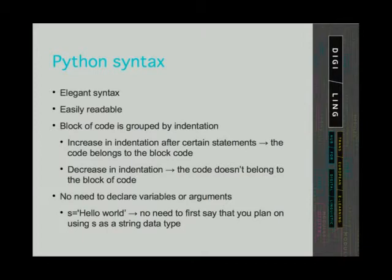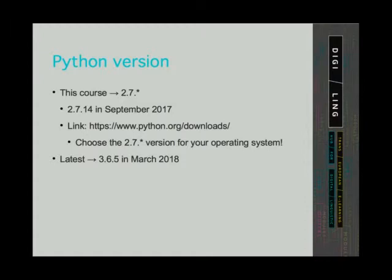We don't need to declare variables or arguments. This means that when we want to store some value in a variable — for example, 'Hello World' in S — we don't need to tell the program that we plan on using S as a string; just by assigning a string, the program knows this. There are different versions of Python: version 2 and version 3. In this course we are using version 2.7 — the latest is 2.7.14, and you should get the third number as high as possible. Follow the provided link and instructions to download and install version 2.7 for your operating system.